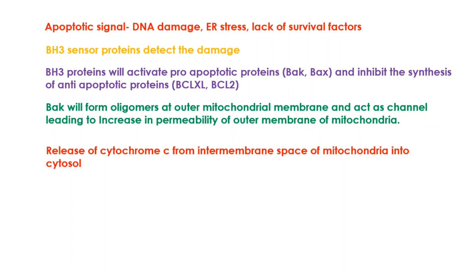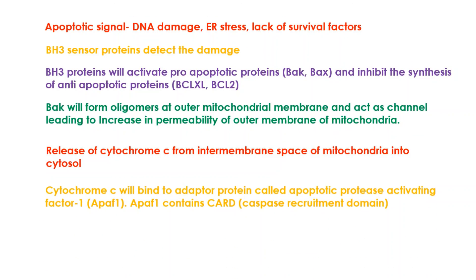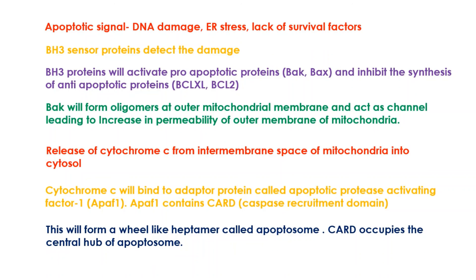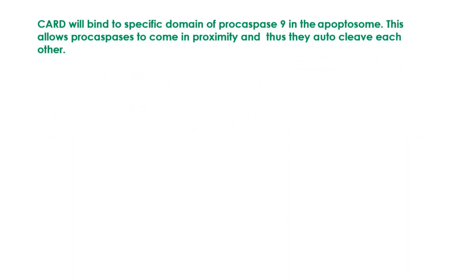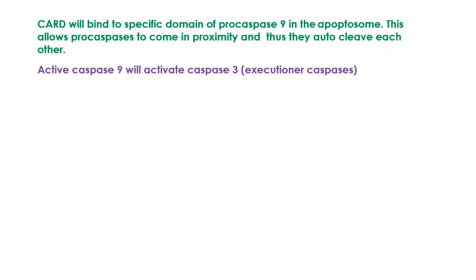Cytochrome c is released from the intermembrane space into the cytosol and binds to APAF-1, which contains the CARD domain. This forms the apoptosome, with CARD occupying the central hub. CARD binds to specific domains of pro-caspase 9 in the apoptosome, allowing pro-caspases to come into proximity and auto-cleave each other. Active caspase 9 then activates caspase 3, resulting in cell death.